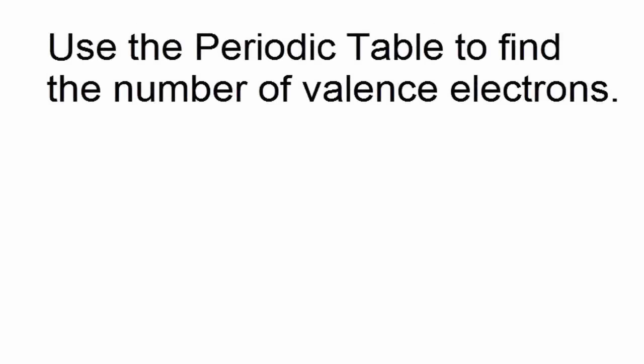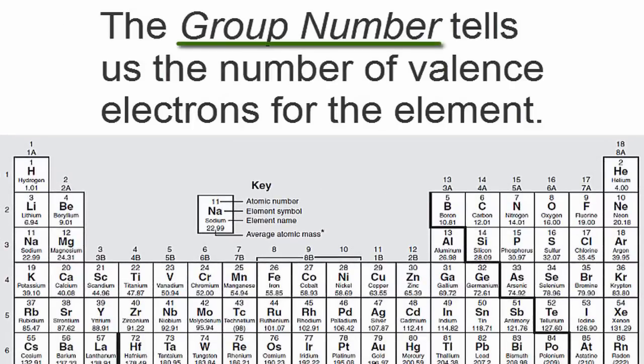We can find the number of valence electrons using the periodic table. The group number tells us the number of valence electrons for the element.